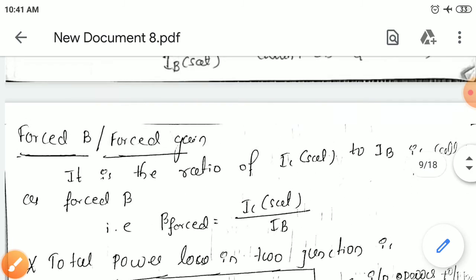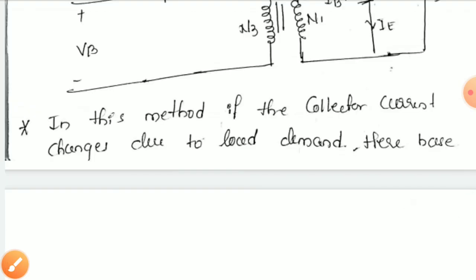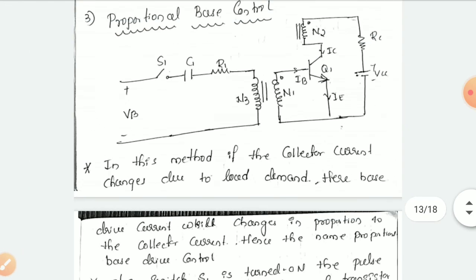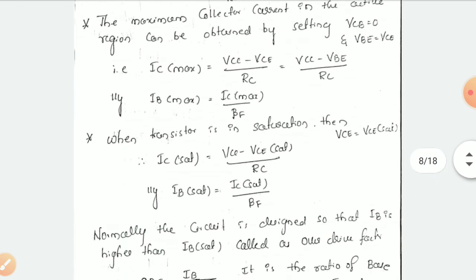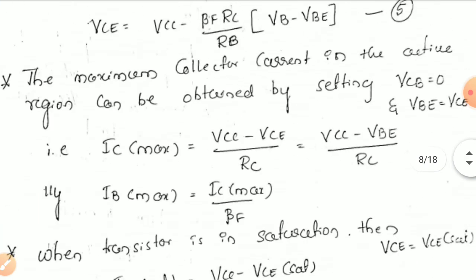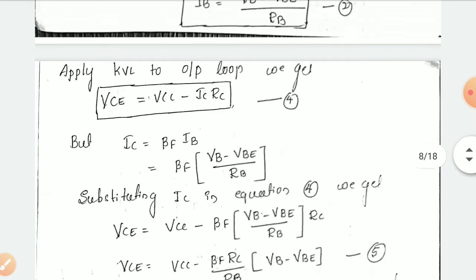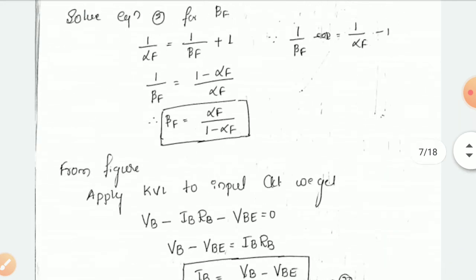This is about the switching characteristics of BJT. The problems on this and the rest of the part we will take up in the next video. Thank you.